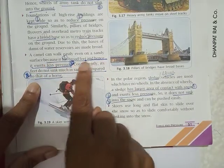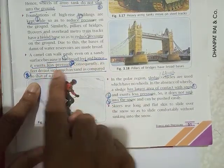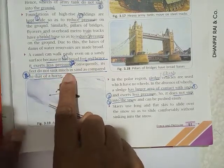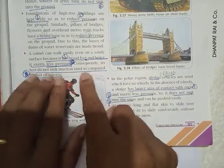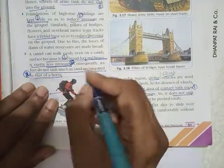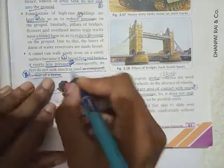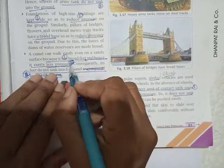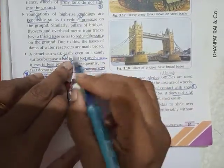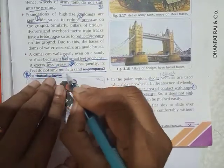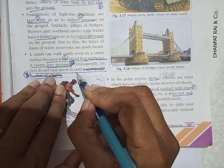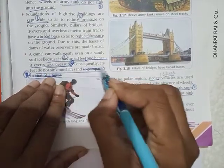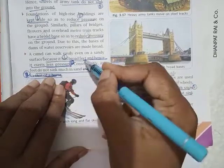For example, I had asked a question: camels can walk easily on a sandy surface. Your answer should have two points. One is because it has broad feet, it exerts less pressure. That is the first point. Second point: therefore, the feet do not sink much in sand. I expect these two points. Now many of you had stopped here itself. This is the technical reason and this is the effect of it or consequence of it.